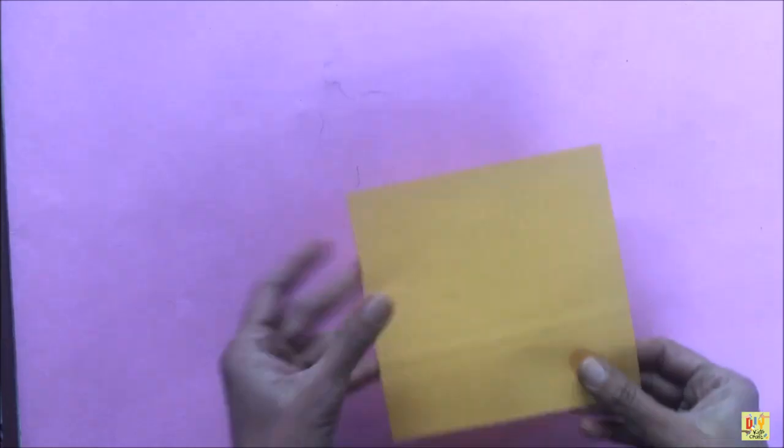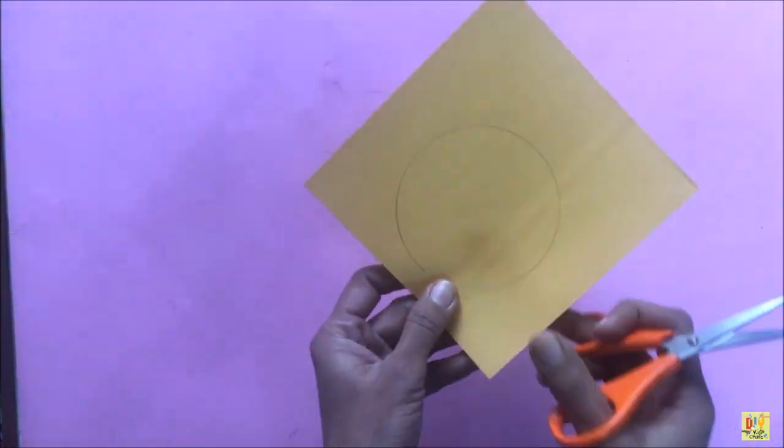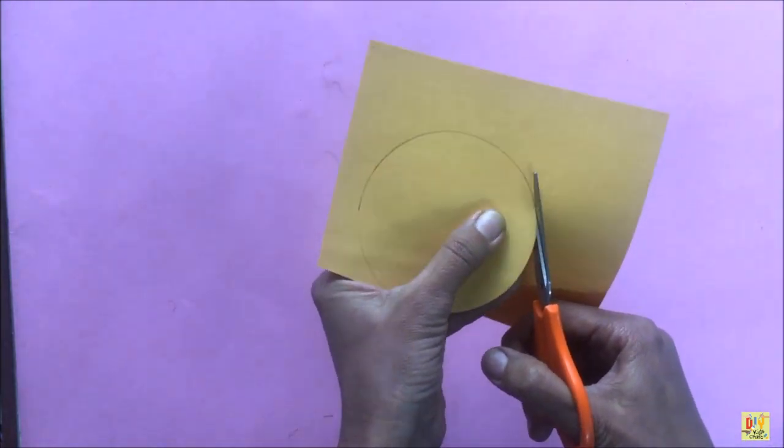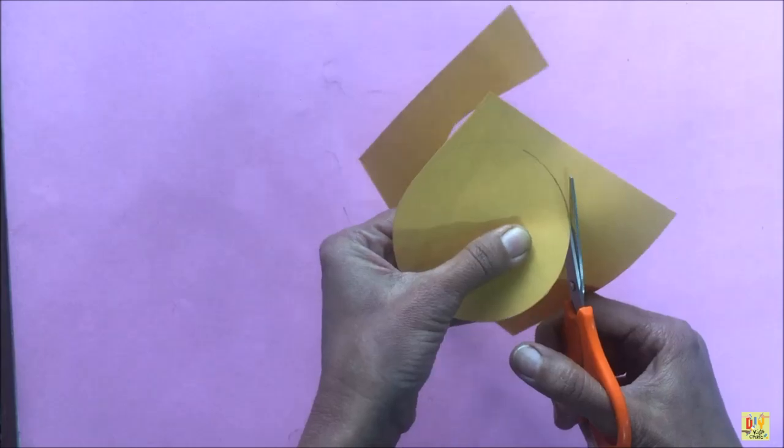Let's make another one. Just repeat the process that we did. Make a circle shape and cut it. Again, be careful using a scissor.